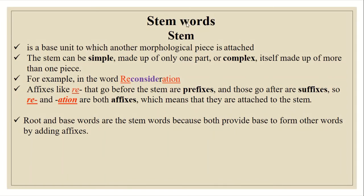A stem is the base unit to which another morphological piece is attached. The stem can be simple, made up of only one part, or complex, made up of more than one piece. For example, in the word 'reconsideration,' both 're-' and '-ation' are affixes attached to the stem 'consider.' Root and base words are both stem words because they provide ways to form other words by adding affixes.